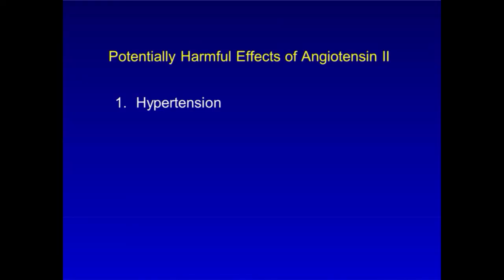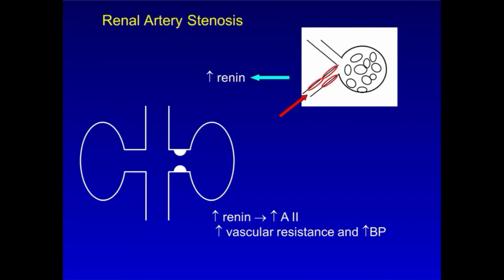However, there are also potentially harmful effects of angiotensin II, and here are four examples. First, it can produce or worsen hypertension by increasing vascular resistance. This is seen, for instance, in renal artery stenosis, where decreased blood flow through the stenotic renal artery is transmitted downstream to the afferent arterioles. This decrease in blood flow stimulates the production of renin by the cells of the afferent arterioles, resulting in production of angiotensin II and leading to an increase in blood pressure.